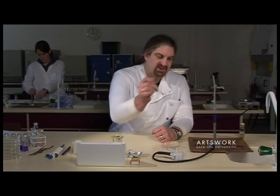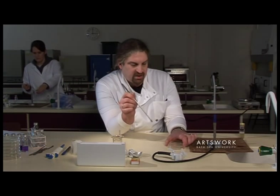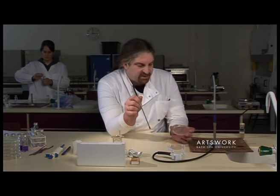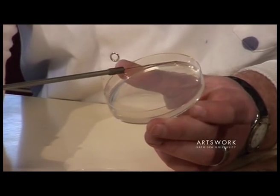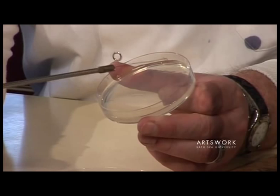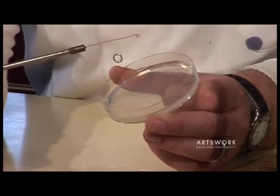Once we've done that, sterilize the loop again. Turn the plate and this time draw the streaks out from where the first set ended. Exactly the same principle—four or five separate streaks going away.